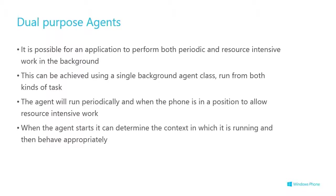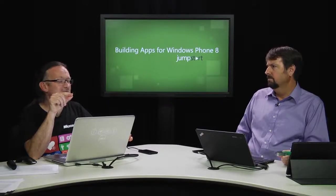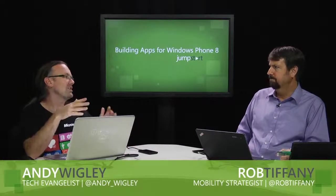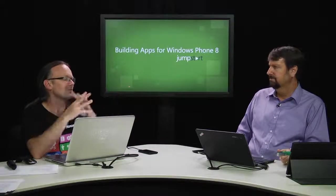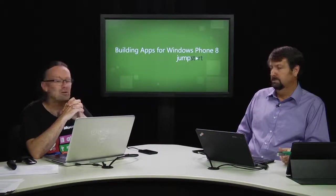Dual purpose agents — so periodic or resource intensive. You can only have one project that can run as a background agent. You've got two modes where you can run for 10 minutes or for 25 seconds, but your single background agent can be scheduled as both. When it starts up, you get args passed in and you can figure out what mode you're being started in, then branch to either the 25-second processing or the 10-minute do-loads-of-stuff processing. You can just have conditional logic in there that handles both. That's great flexibility.